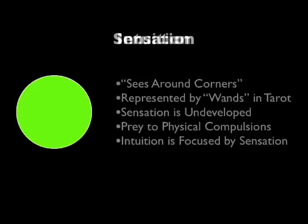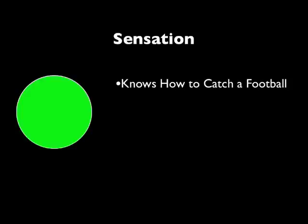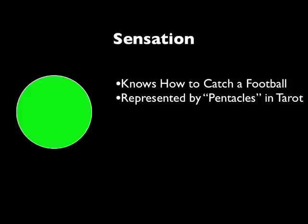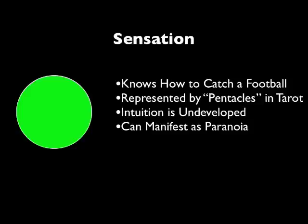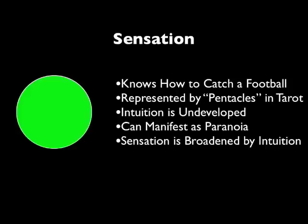The final function is sensation — the other end. Sensates know how to catch a football. Extroverted sensates, generally male, tend to be very popular, fit in very well, and like to stick with the rules. It's represented by pentacles in the tarot deck — also known as coins, with the pentacle being the symbol on those coins, the coin of the realm. For sensates, they have trouble with their intuition — it tends to be undeveloped, and because it's not very broad, it can manifest as paranoia. Sensates really need to be broadened by a sense of context for the world, and developing your intuition will help you do that.